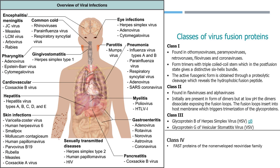Class 2 protein lacks the central coiled-coil structure, and contains a characteristic elongated beta-sheet ectodomain structure that refolds to give a trimer of hairpins. Examples of class 2 viral fusion proteins include the dengue virus E protein and the West Nile virus E protein. Class 3 structural conformation is a combination of features from class 1 and class 2 viral membrane fusion proteins. An example of a class 3 viral fusion protein is the rabies virus glycoprotein.